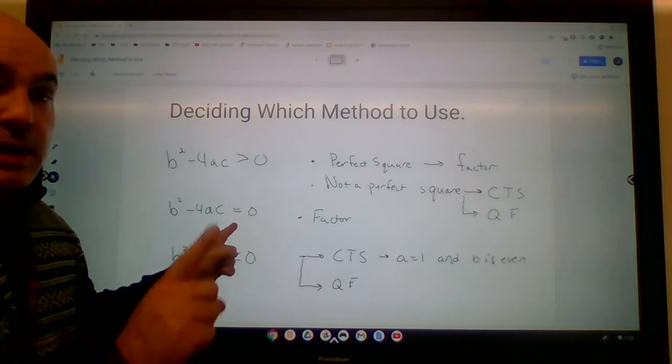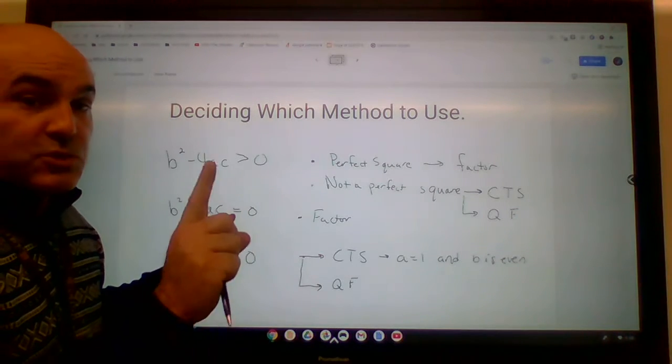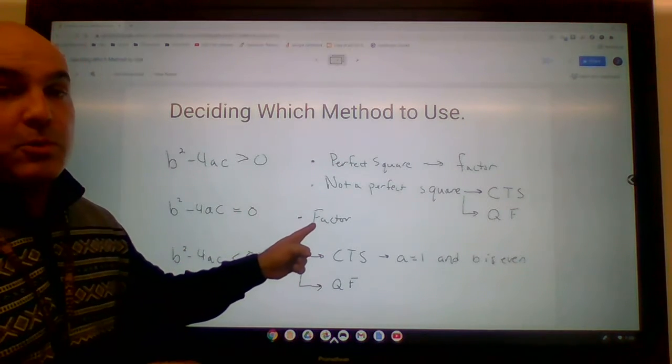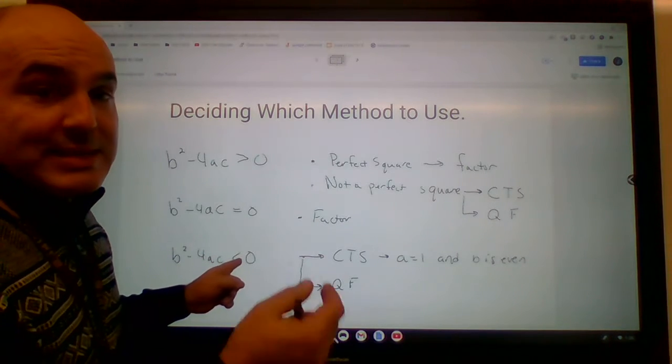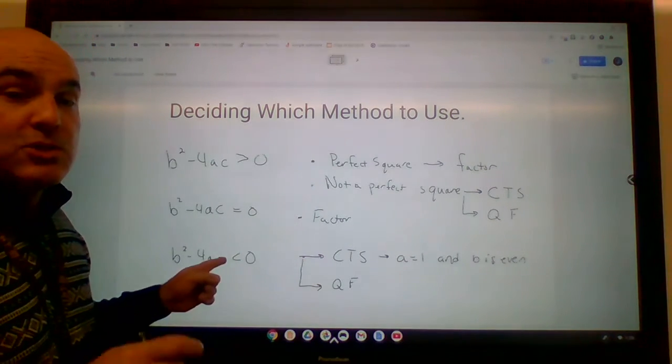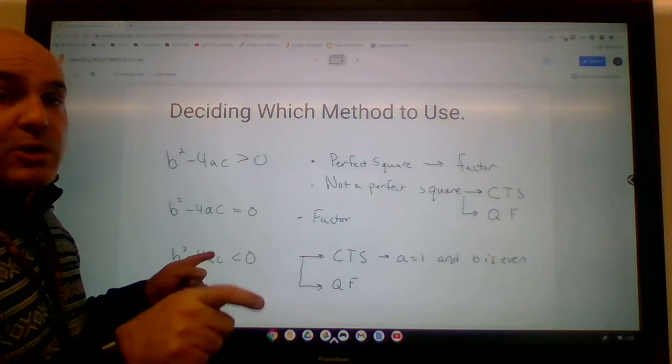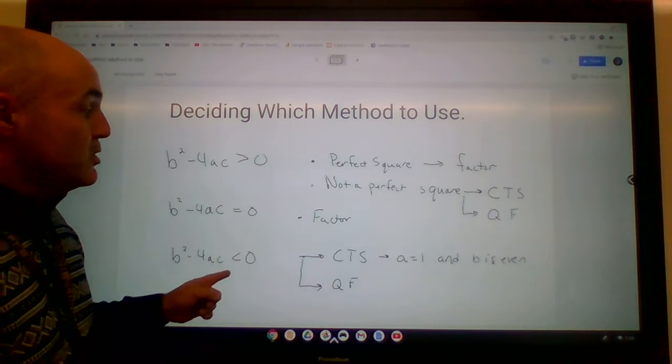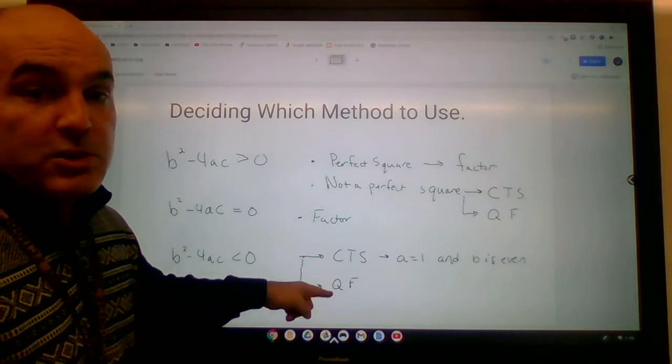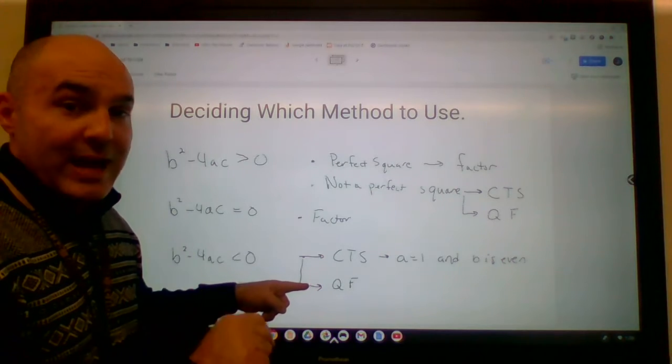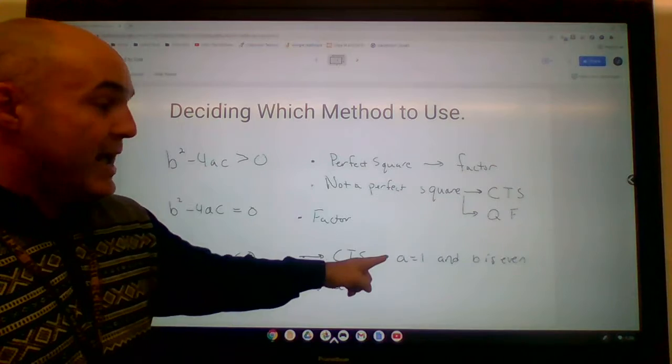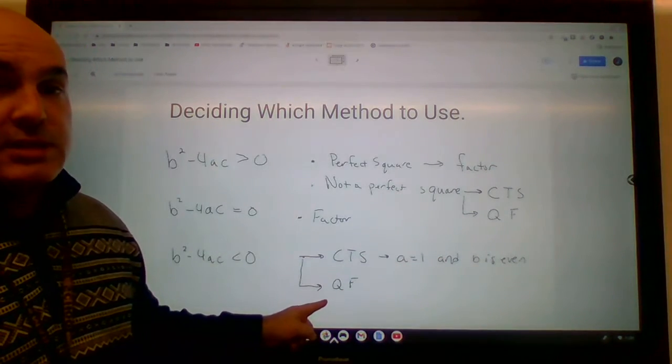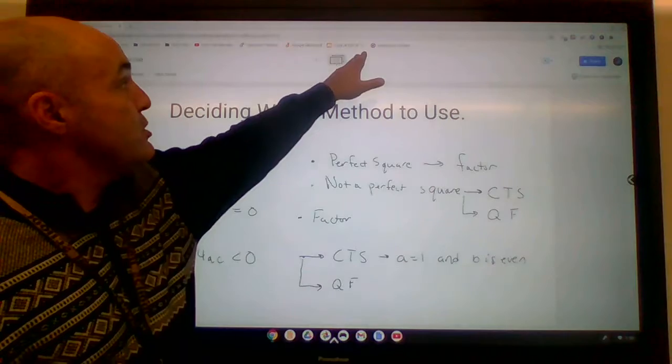Now, if your discriminant happened to be 0, you're going to get one real rational root, and since it's real and rational, it's factorable. Go back and factor. If b squared minus 4ac is a negative value, that means you're going to have an imaginary value or a complex solution. So again, you're going to either be completing the square or quadratic formula. Factoring is not an option. Again, complete the square if A is 1 and B is even. If it's not, just continue with the quadratic formula.